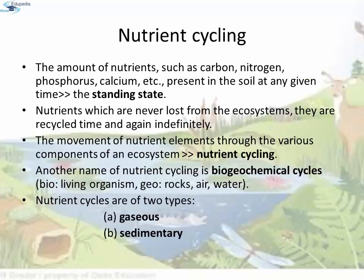Nutrient Cycling: The amount of nutrients such as carbon, nitrogen, phosphorus, calcium, etc. present in the soil at any given time is referred to as the static state. It varies in different kinds of ecosystems and also on a seasonal basis. Nutrients are never lost from the ecosystem — they are recycled time and again indefinitely. The movement of nutrient elements through the various components of an ecosystem is called nutrient cycling, also known as biogeochemical cycles. Here 'bio' means living organisms and 'geo' means rocks, air, and water. Nutrient cycles are of two types: gaseous and sedimentary.